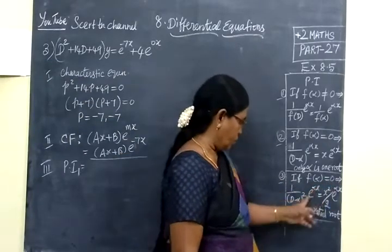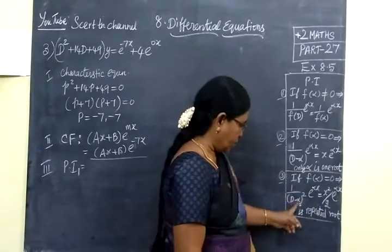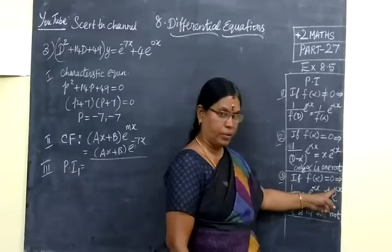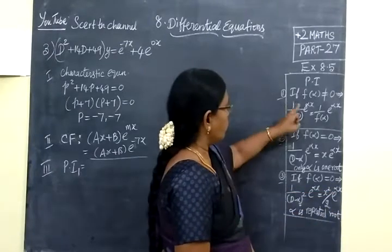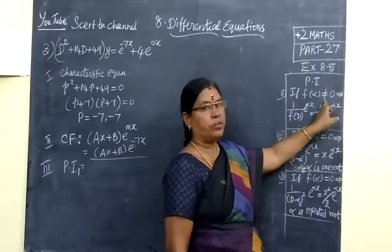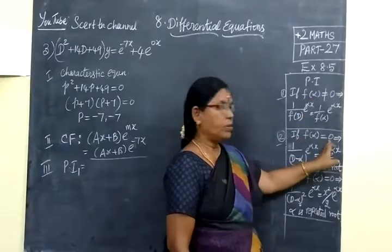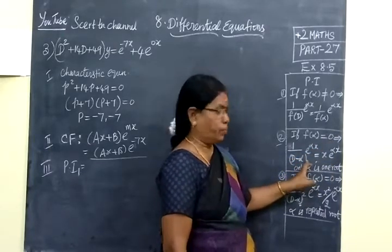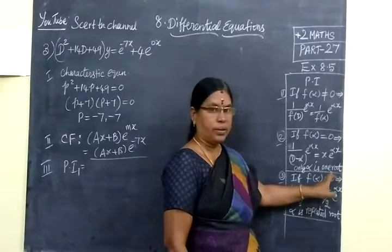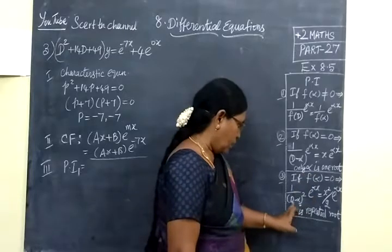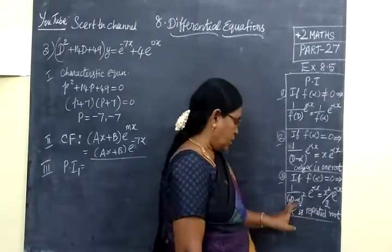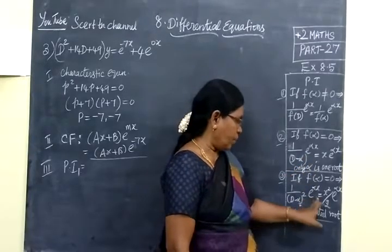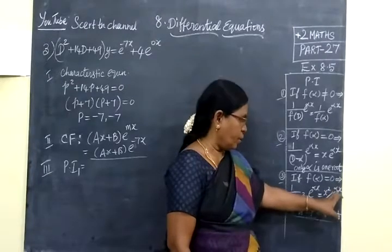The third condition: if f(α) = 0 and the roots are repeated, then 1/(D - α)² acting on e^(αx) equals (x²/2)e^(αx). If f(α) ≠ 0, that's different. For one root it's D - α, for repeated roots it's (D - α)². This is the third condition formula: (x²/2)e^(αx).